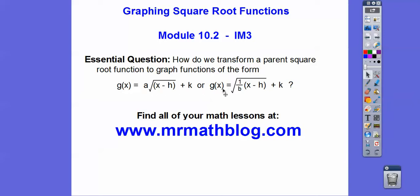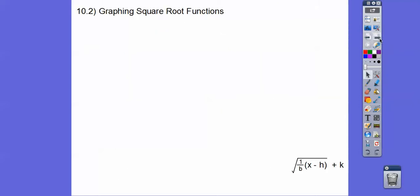When it's 1 over b and it's on the inside, this is our horizontal stretch. If it's positive, it goes to the right; if it's negative, it goes to the left. And remember, hk is that opposite-same stuff. Alright, so let's get started here.